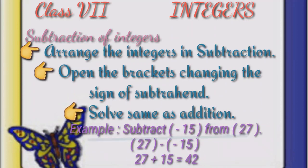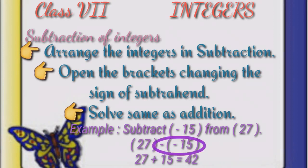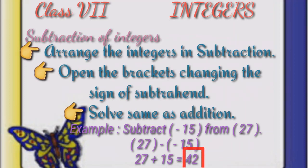For example, subtract minus 15 from 27. Here 27 is the minuend and minus 15 is the subtrahend. So we will arrange it as 27 minus minus 15. 27 will remain the same and minus minus 15 will become plus 15, because the subtraction was negative and we made it positive. Now both the integers are positive, so we will add the numeric values and write the same sign. Therefore, the answer is 42.